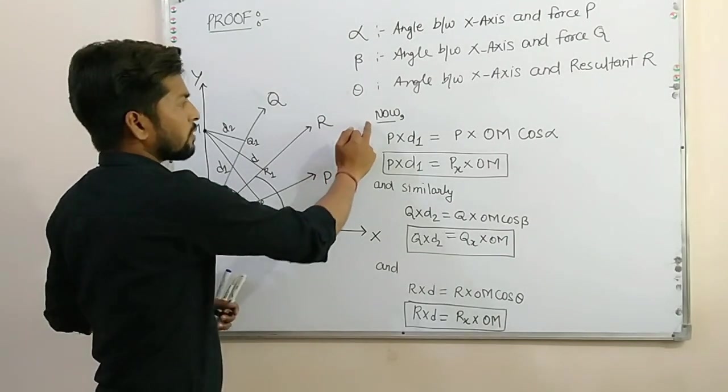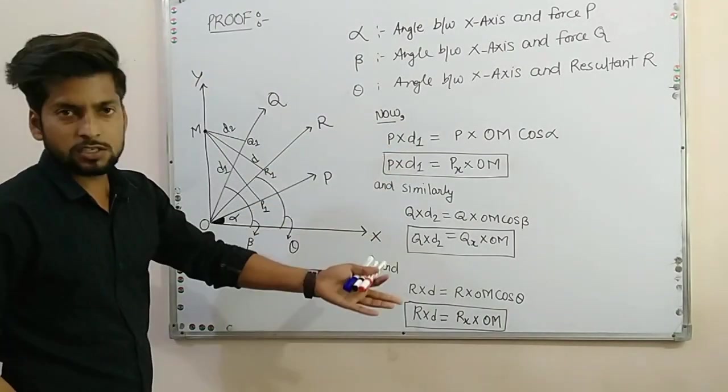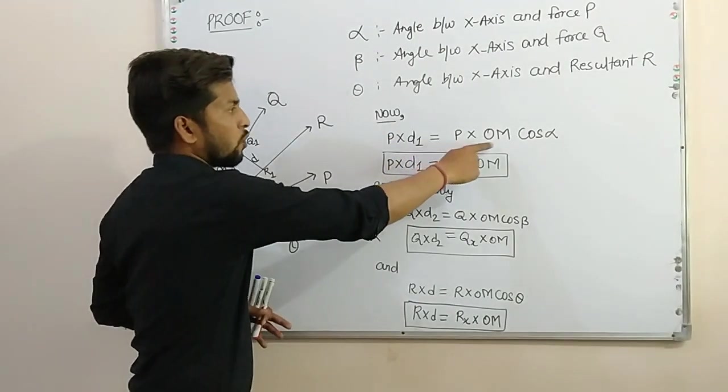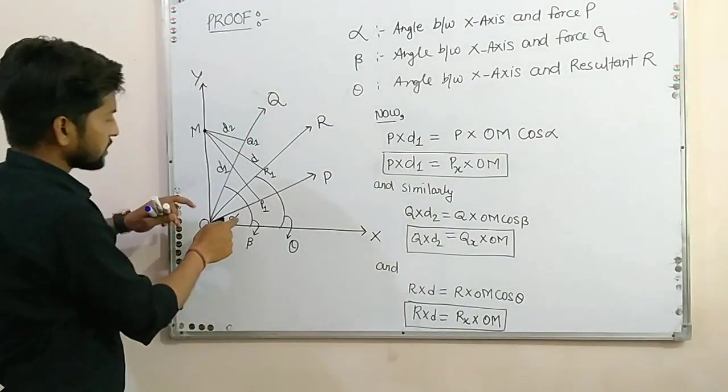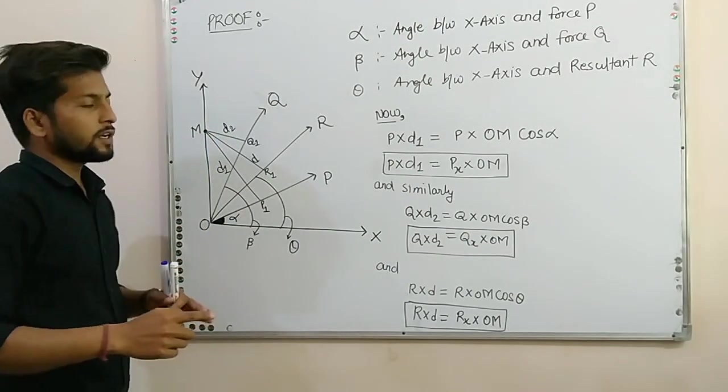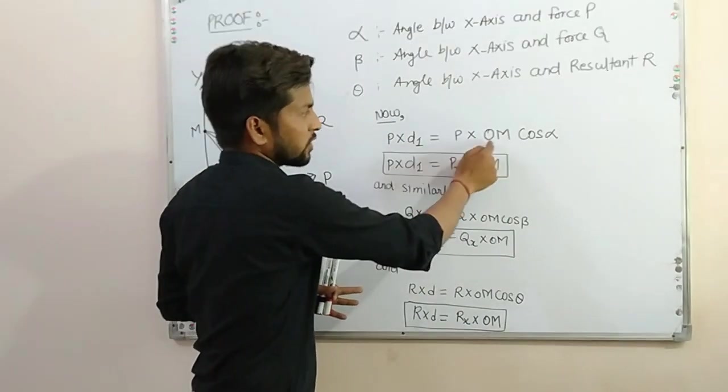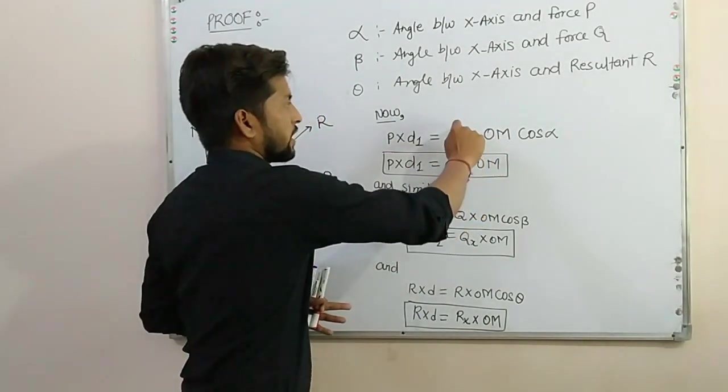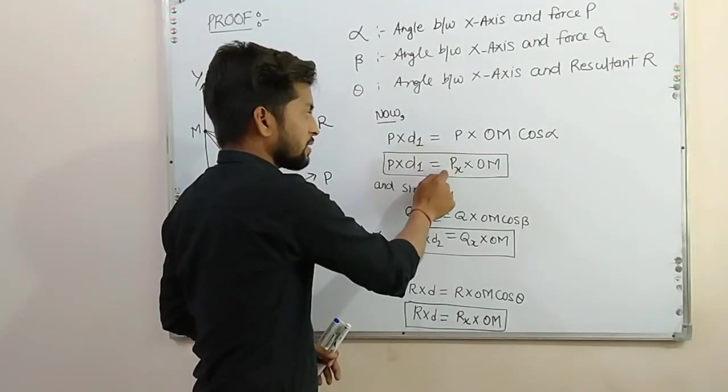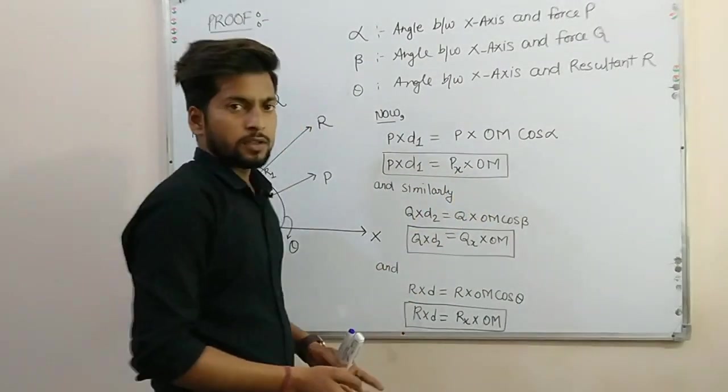Now, moment of P. If I talk about moment of P, then P into D1. This is the moment, formula for the moment. And this is equal to P into OM cos alpha. If this angle is alpha, then this angle from Y axis will also be alpha due to the geometry. Then P into D1 is equal to what? P into OM into cos alpha. Then P cos alpha, if we take these both together, then this becomes the X component of P, Px. So P into D1 is equal to Px into OM.